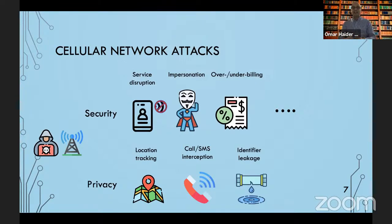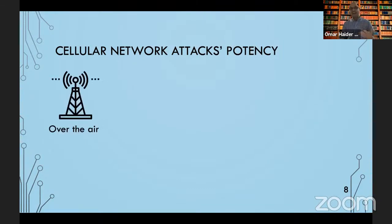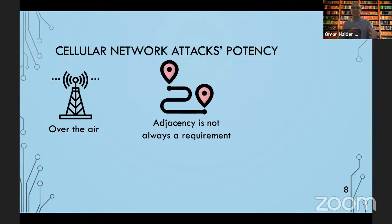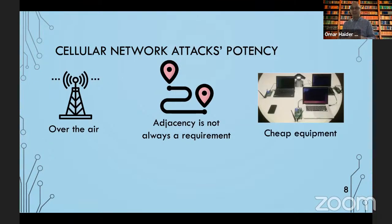Cellular networks have a bunch of persistent identifiers that uniquely identify either the device, the SIM card, or the subscriber. If you leak this identifier, it has really bad implications - it is often the first step to carrying out other attacks like location tracking. If you've heard about stingrays, that's what they're trying to do: leak one of the persistent identifiers of the device. Cellular network attacks are particularly important due to the fact that an attacker can carry them out over the air, so the attacker does not need to be adjacent to the victim. And the equipment needed for carrying out these attacks is not expensive. This is actually one of our test beds, which costs around $4,000 for the equipment alone, excluding computers.